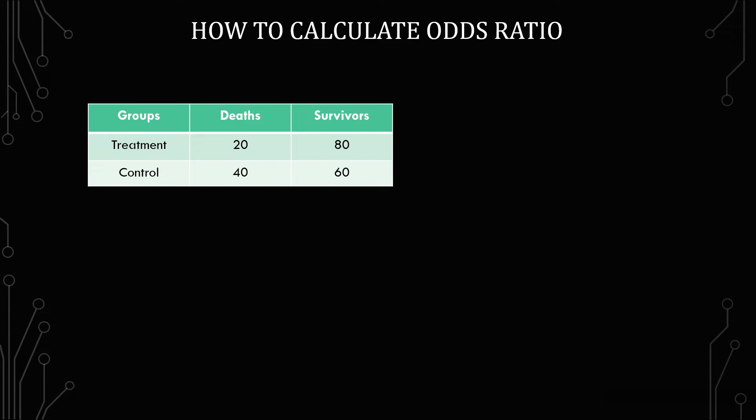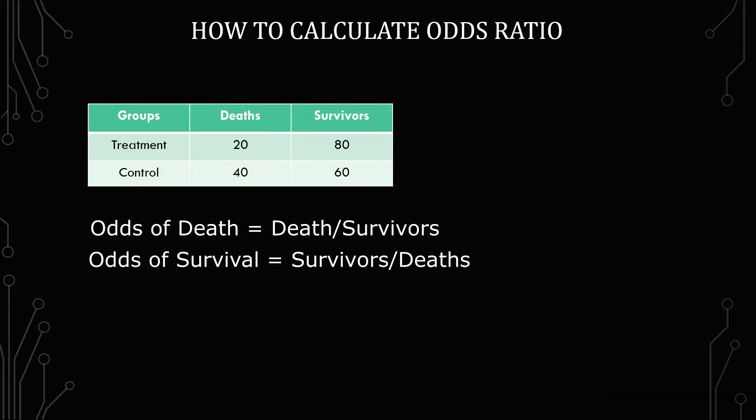We have a treatment group, a control group, and then deaths and survivors for each. When it comes to the odds, just make sure you're being consistent. You're either doing the odds of death or the odds of survival.